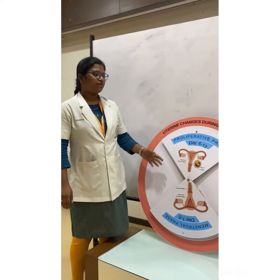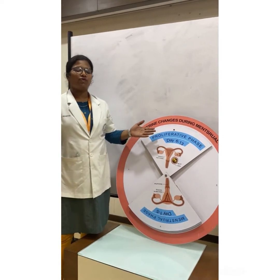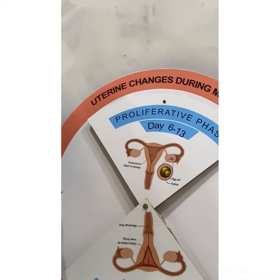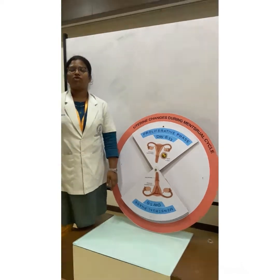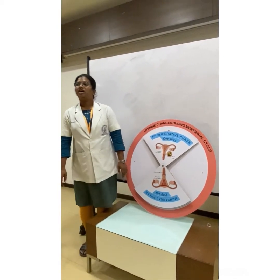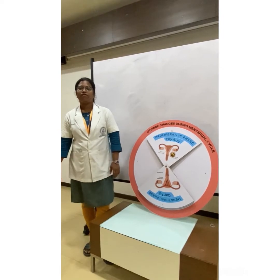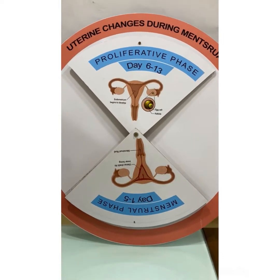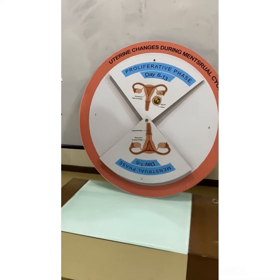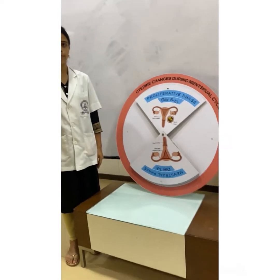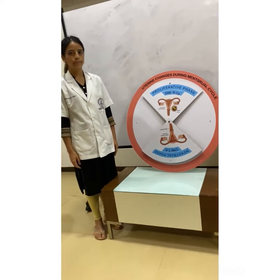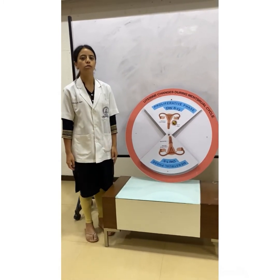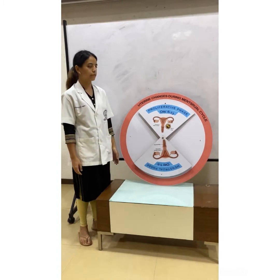Menstrual phase is followed by the proliferative phase, which is between the 6th and 13th days of the menstrual cycle. It is when the menstruation stops and the ovulation begins. It corresponds to the follicular phase of the menstrual cycle. Now I will explain in detail about what happens to the endometrium during the proliferative phase.